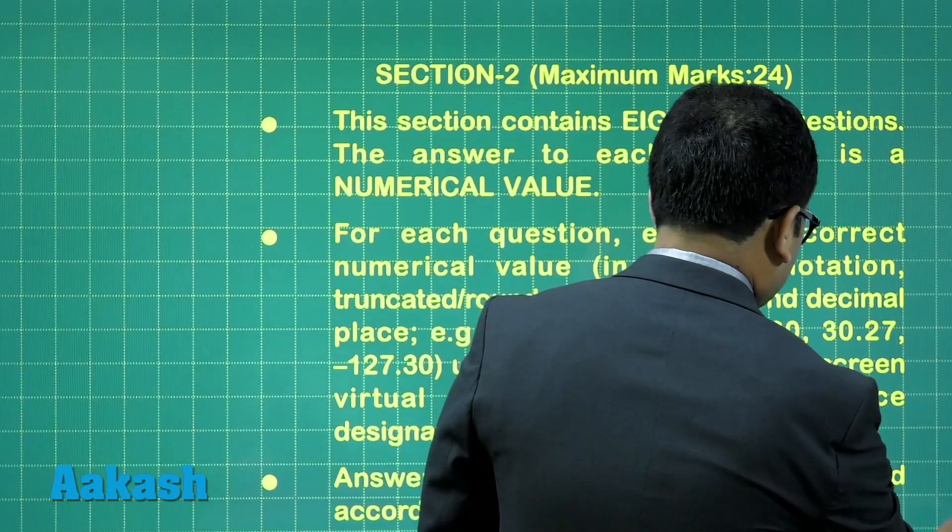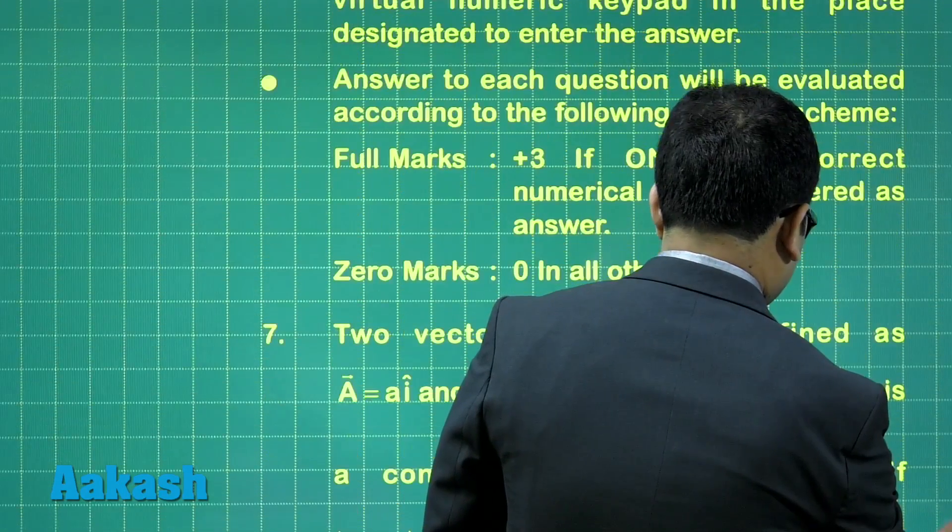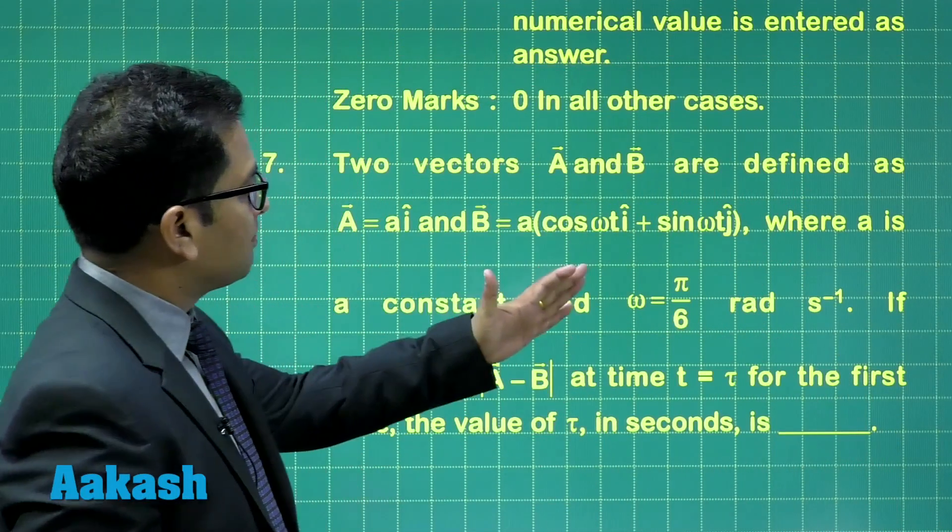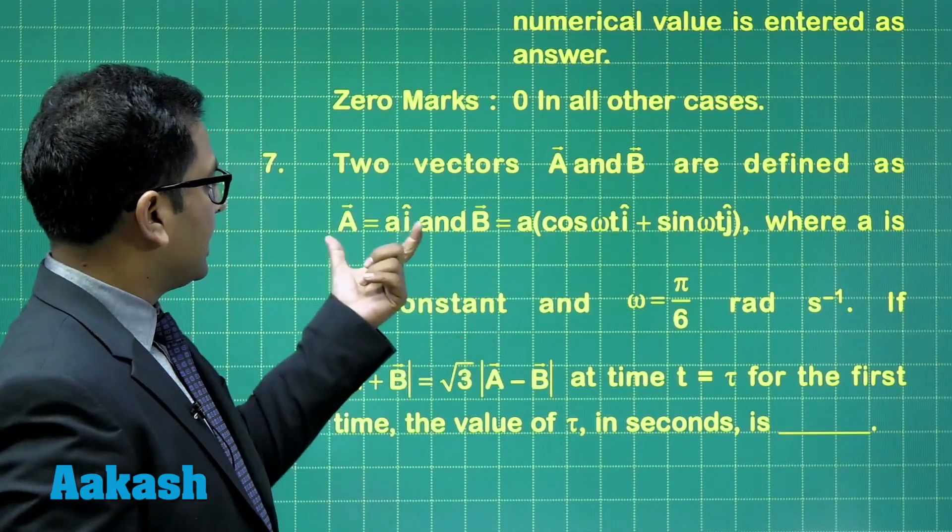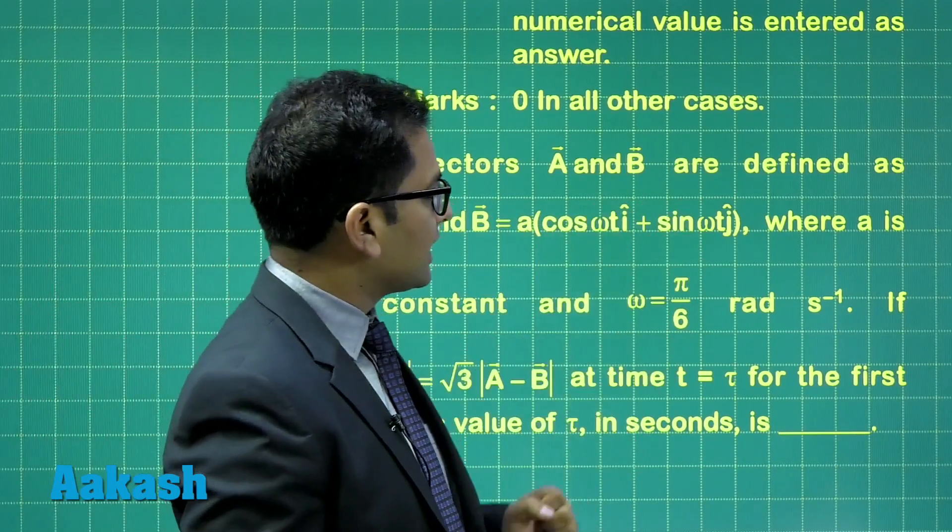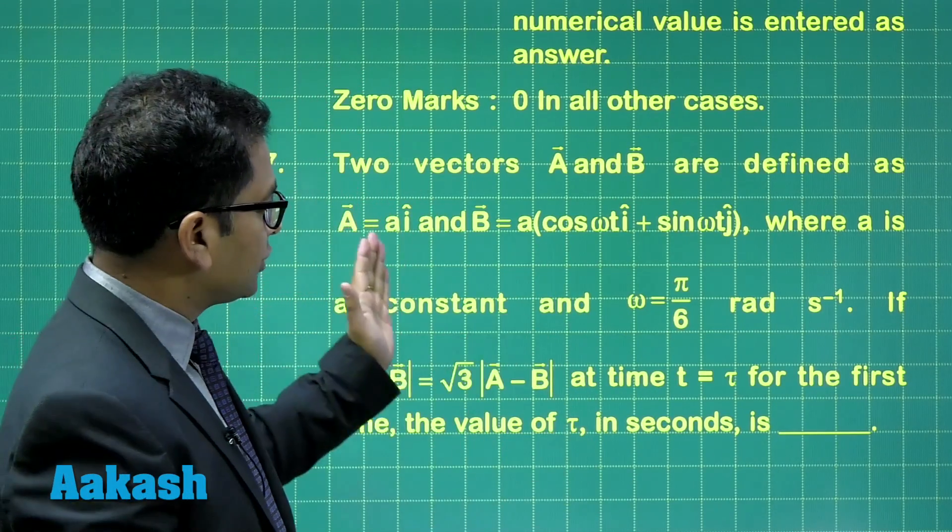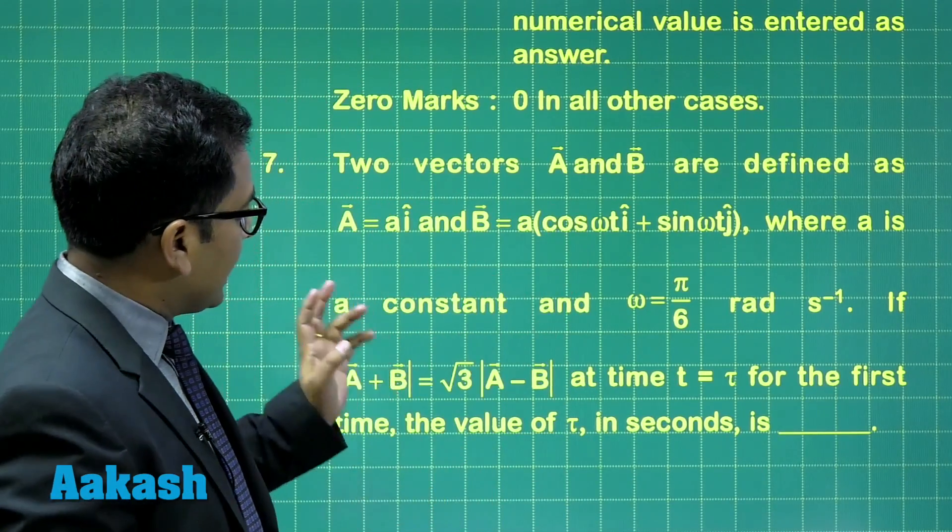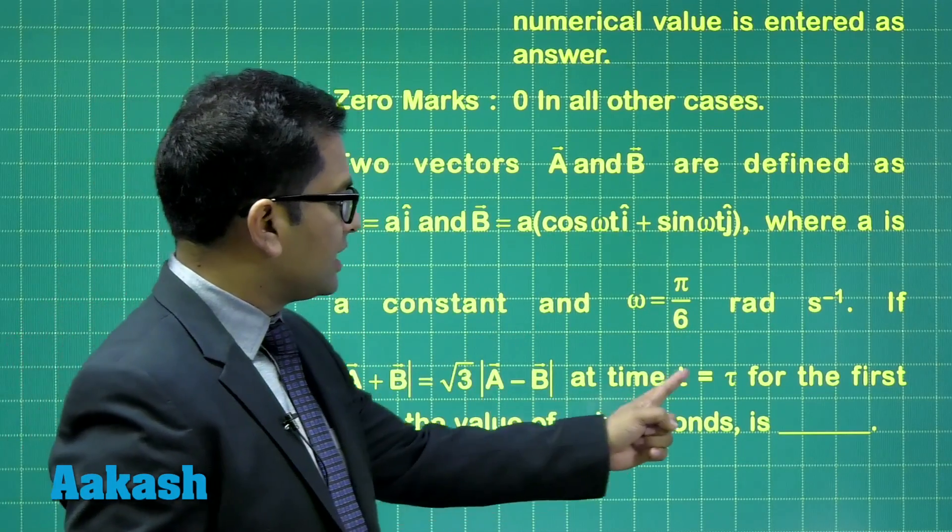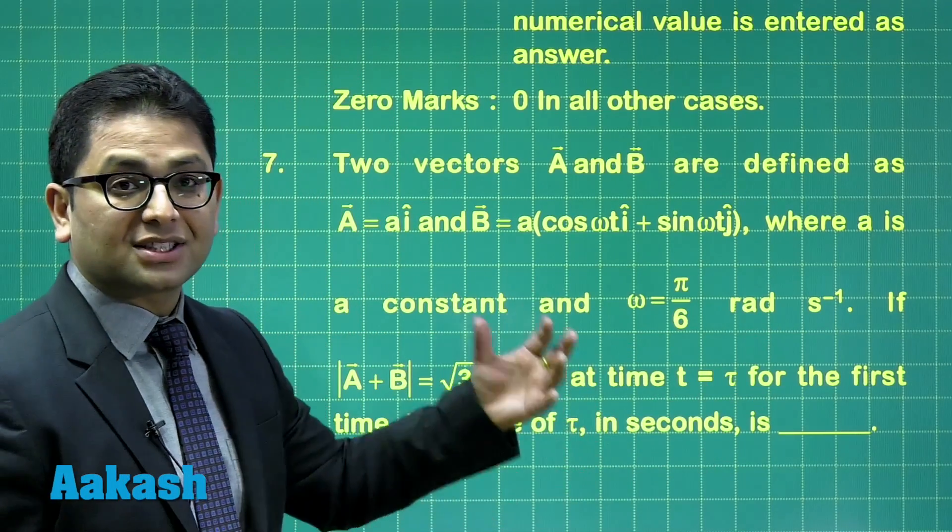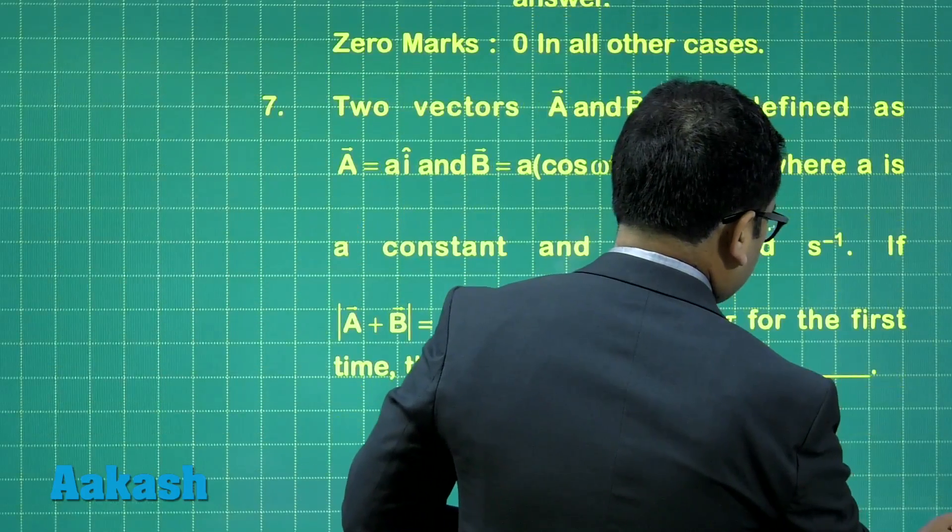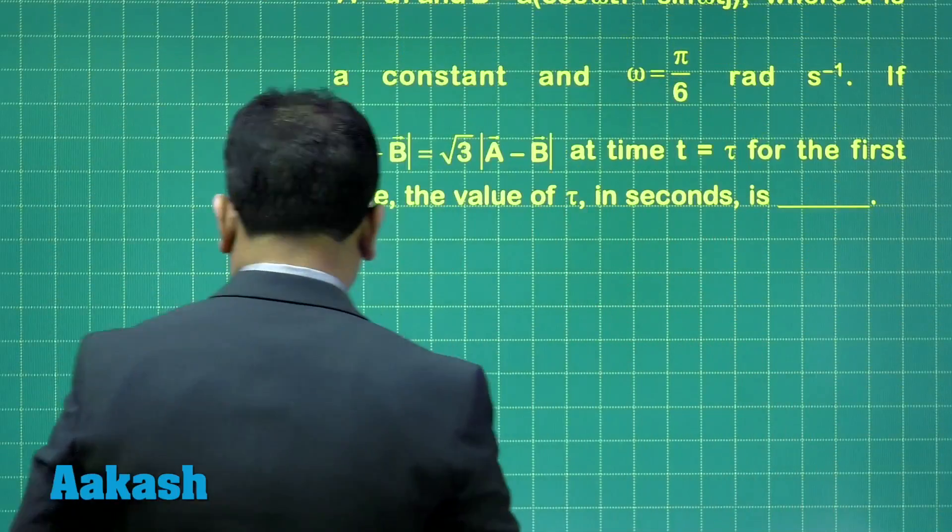Question number seven is from vectors. Two vectors A and B are defined as: A vector is A î, and B vector is A cos ωt î + A sin ωt ĵ. The magnitude of both is A, and ω is given as π/6 rad s⁻¹. If |A + B| = √3|A - B| at time t = τ for the first time (the function is periodic), we need to calculate the value of time. Let me draw the diagram.